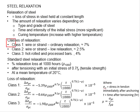There are three classes of relaxations. Class one is for the wire or strand with ordinary relaxation, which is about 7%. Class two is the wire or strand of low relaxation, about 2.5%. And class three is for the hot-rolled and processed bars, with relaxations of about 4%.